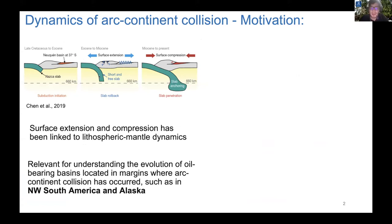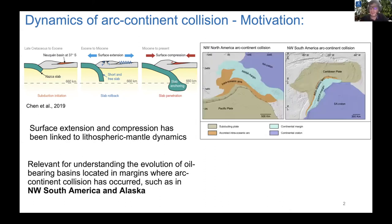In particular, episodes of compression at the surface have been linked to where the subducting slab is anchoring the upper-lower mantle transition zone. This is relevant for understanding the evolution of oil-bearing basins located in margins where arc-continent collision has occurred — this is the case of the northwestern margin of South America and Alaska. These two arc-collisional margins consist of a subducting oceanic plate in dark yellow, a colliding intraoceanic arc in orange, a continental plate, and a